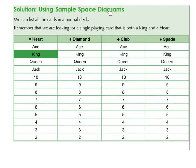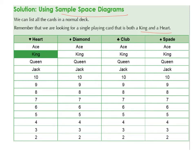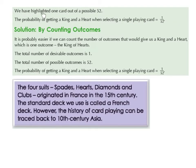Now let's have a look at the solution using a sample space diagram. We can list all the cards in a normal deck. Remember that we're looking for a single playing card that is both a king and a heart. So we list the hearts, the diamonds, the clubs, and the spades. We see we have four kings, but there's only one of them that is a king of hearts. So 1 over 52 — we've highlighted one card out of a possible 52. The probability of getting a king and a heart when selecting a single card is 1 over 52.